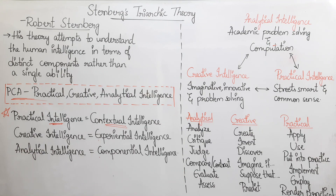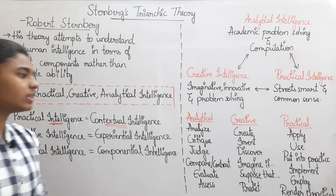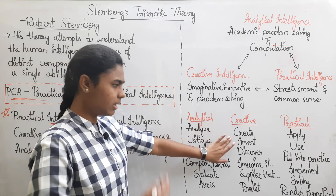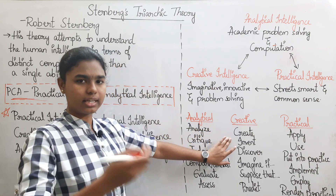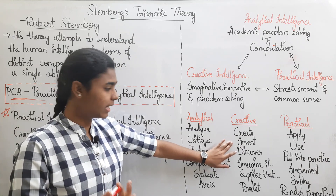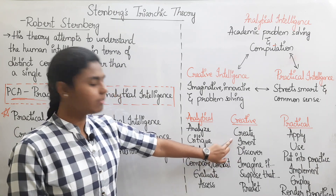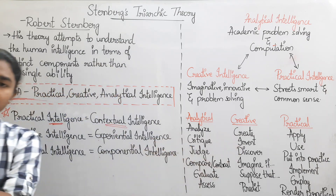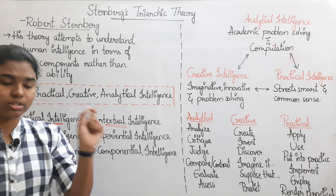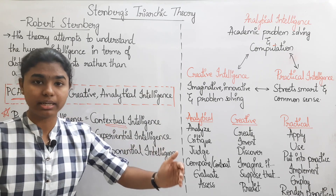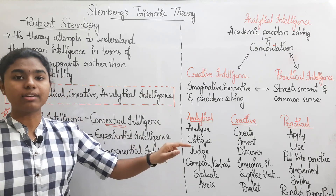For Creative intelligence, the key action words are: create, invent, discover. You can discover anything. These represent creative thinking and innovation.